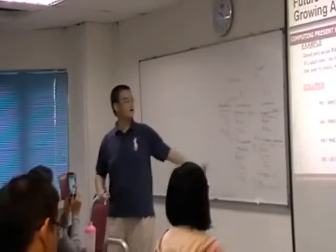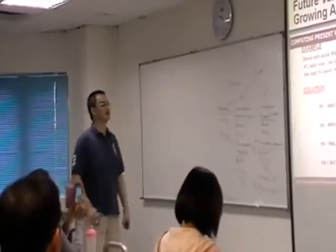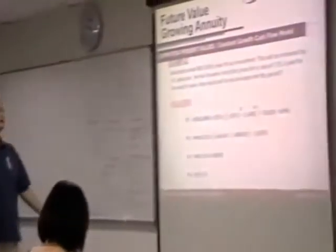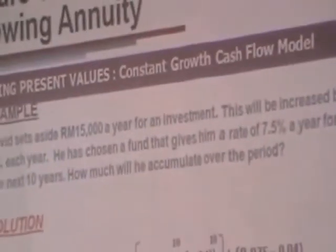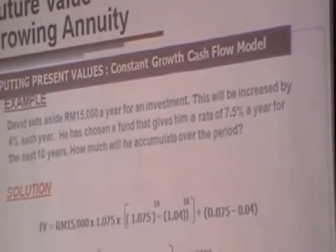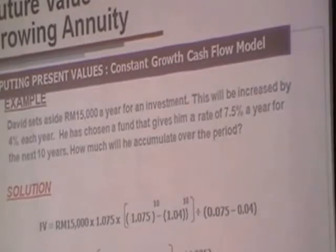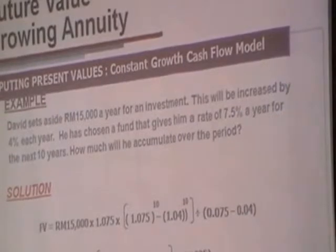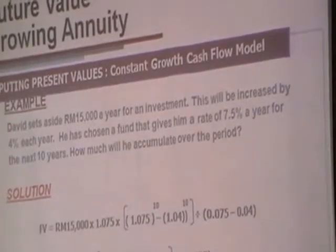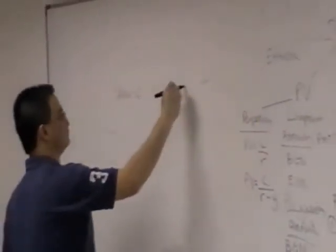For example, listen to this part here. David set aside 15,000 a year for an investment. This will be increased by 4% each year. He has chosen a fund that gives him a rate of 7.5% a year for the next 10 years. How much money he accumulated over the period? Again, in attempting any of these questions, do plot a timeline. Year zero, 10 years.